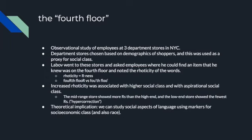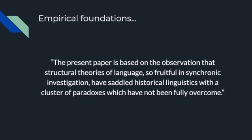The theoretical implication is that we can study social aspects of language by using markers for socioeconomic class and race — because often, even today, the lower socioeconomic class is often non-white. The empirical foundations this paper wishes to discuss are based on the observation that structural theories of language, so fruitful in synchronic investigation, have saddled historical linguistics with a cluster of paradoxes which have not been fully overcome.